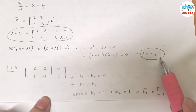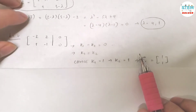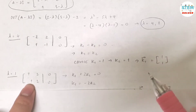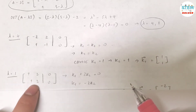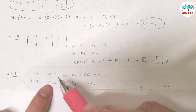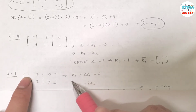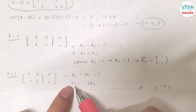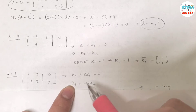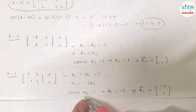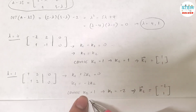Now do the same thing for lambda equals 1. Plug it into A minus lambda I and you will get another matrix. As you can see, the rows are proportional, so this matrix also has infinite solutions. Pick the first equation: k1 plus 2k2 equals 0. Solving for k1 gives k1 equals negative 2k2. Choose k2 equals 1, then k1 equals negative 2.